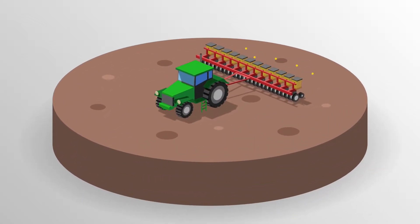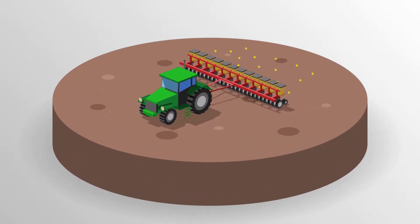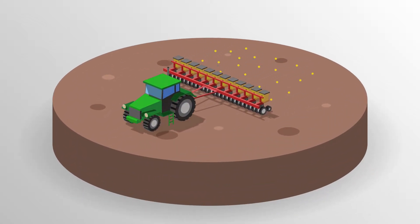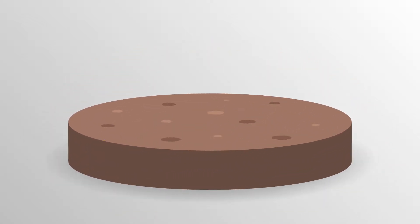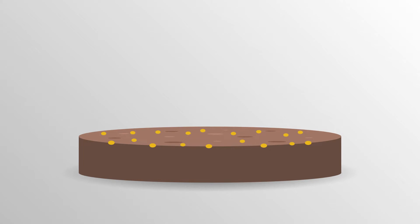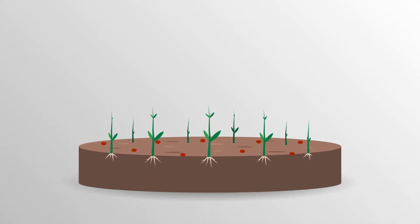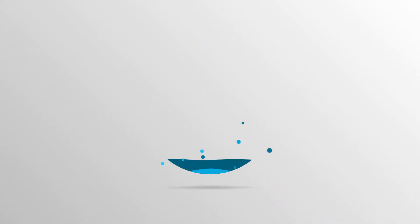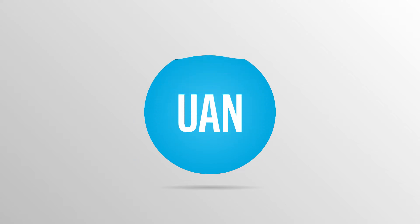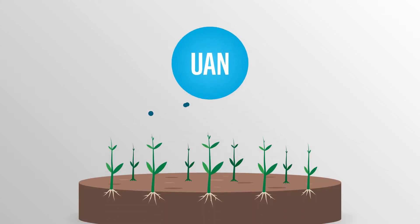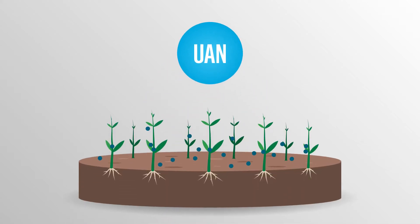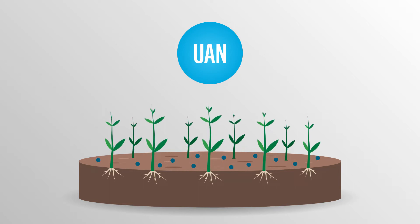Would you leave spilled seed corn unplanted after investing in that seed? We wouldn't either. That same principle applies for urea ammonium nitrate, or what is more commonly known as UAN or liquid nitrogen. UAN is an excellent source of nitrogen and a very versatile source of plant nutrition.